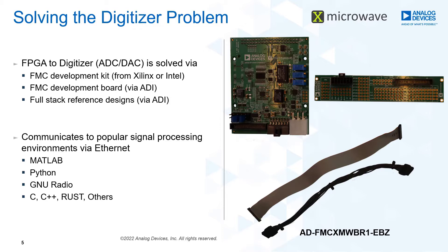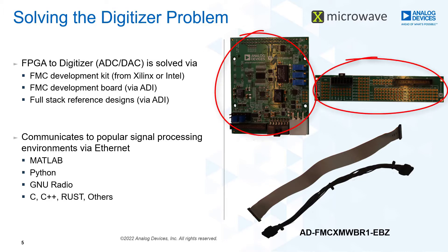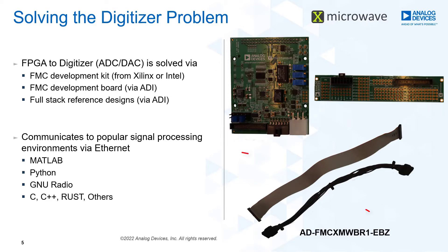The kit consists of two boards and ribbon cables: the FMC X-Microwave Bridge Board, the FMC X-Microwave Protoplate Interface Board, a ribbon cable for signals and a cable for voltage rails.